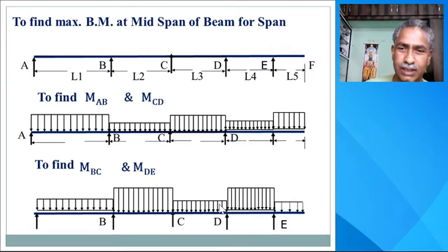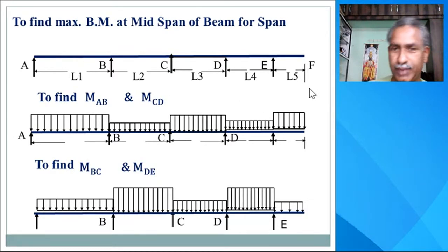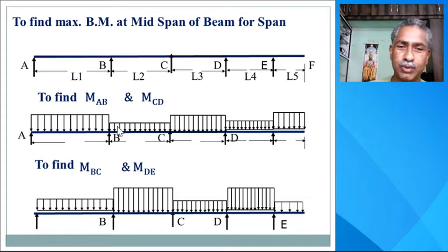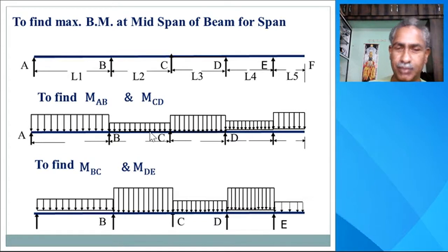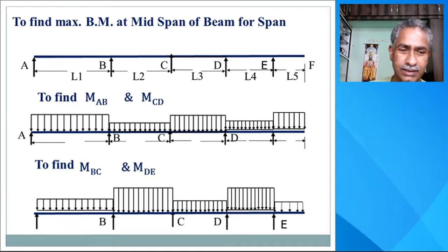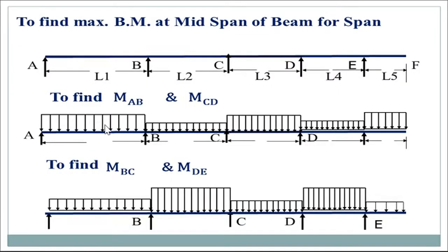We take one example: this is a continuous beam ABCDEF. To find the maximum moment, first we find the maximum bending moment at the mid-span, say at AB. We apply maximum load over AB and only minimum load (design dead load) on the other spans. Then for CD, maximum load again, and for DE, minimum load. Using this combination, we get the maximum bending moment in the mid-span of AB and mid-span of CD.